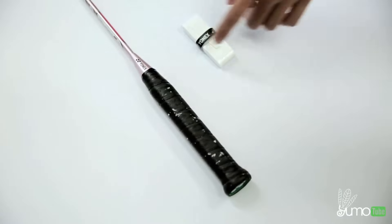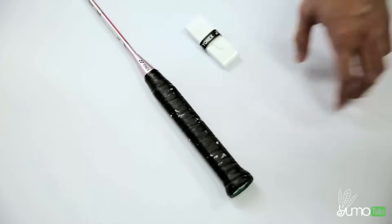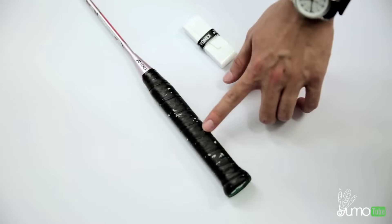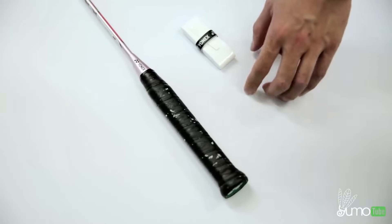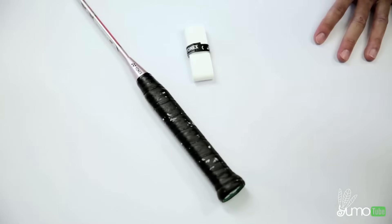So all rackets will come with an original leather grip. This one is pretty thin so it's not as comfortable, so many people choose to buy an overgrip and put it on top to give it more comfort and cushion for their hands.